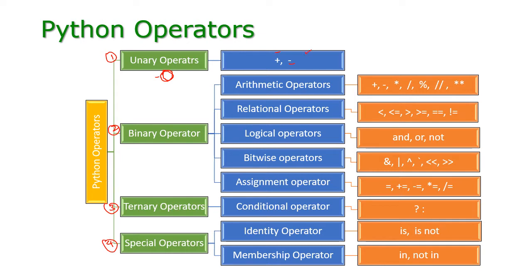Unary plus is default — no need to give plus in front of any number. Plus is automatically hidden in all the numbers. But if you want to negate a particular number, we can put a minus sign in front of the number. That means the minus will be multiplied by this number. So if it is positive, it will become negative; if it is negative, it will become positive. This is unary operator.